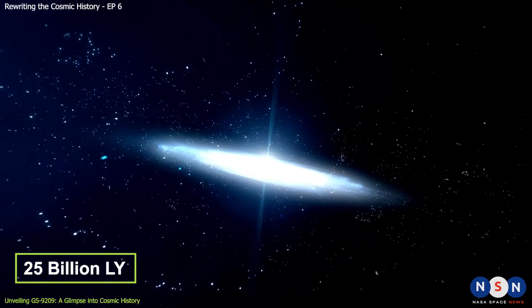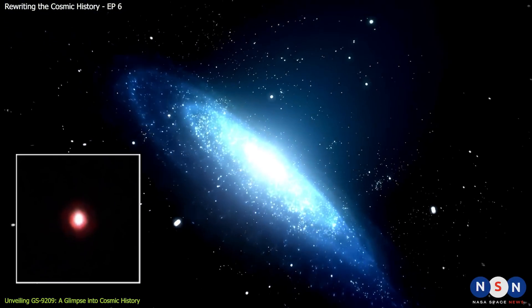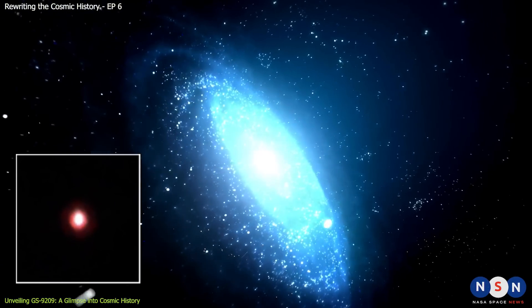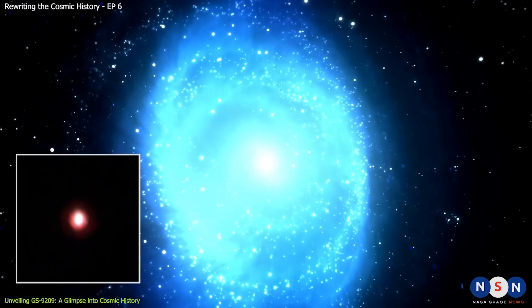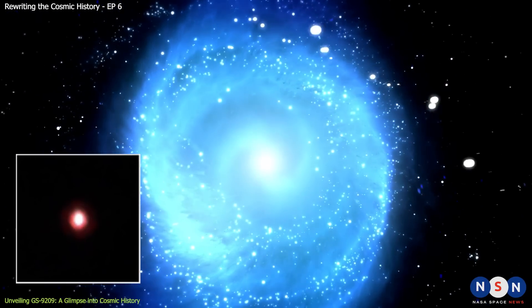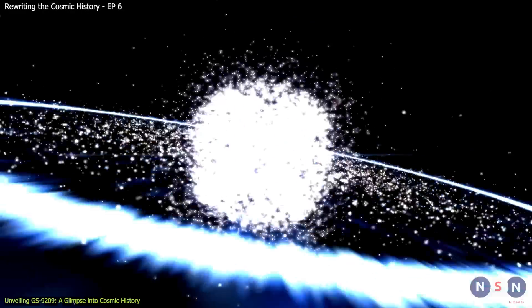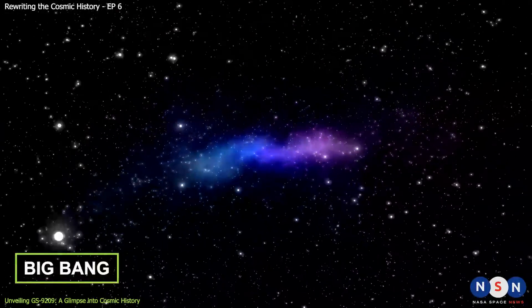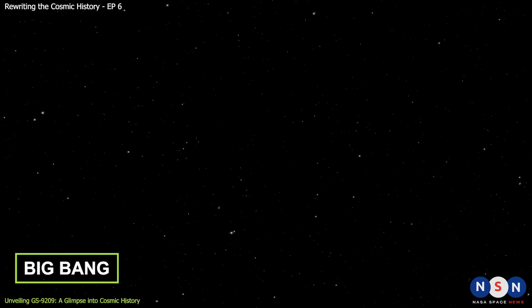What sets GS 9209 apart, making it all the more remarkable and enigmatic? It turns out that GS 9209 is one of the earliest and most massive galaxies ever detected. It emerged merely 600 to 800 million years after the cataclysmic event known as the Big Bang, marking an exceptionally early epoch in cosmic history.